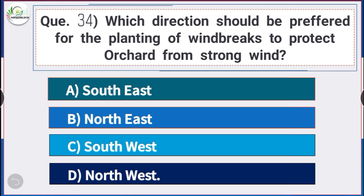Question number 34: Which direction should be preferred for planting of windbreaks to protect an orchard from strong wind? Answer is option D — northwest direction. Planting of windbreaks should be done in the northwest direction to protect the orchard from strong wind.